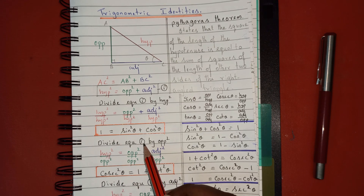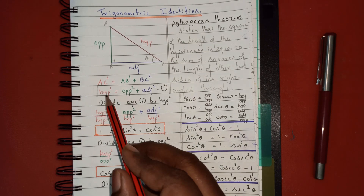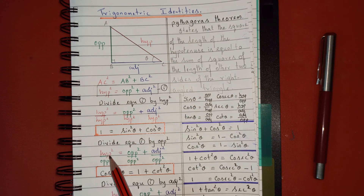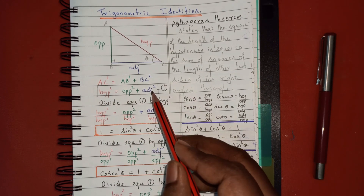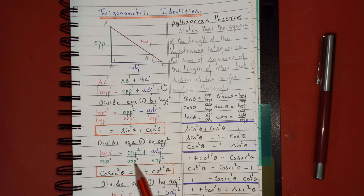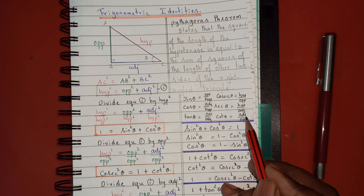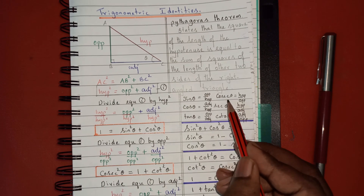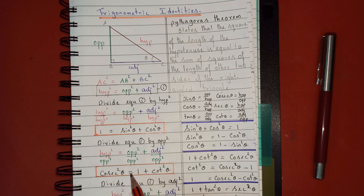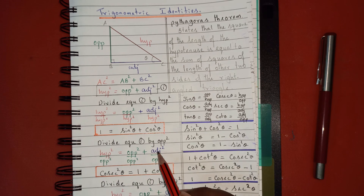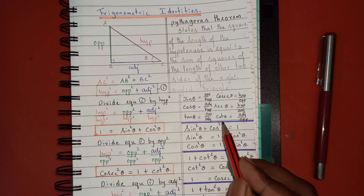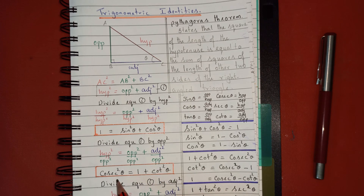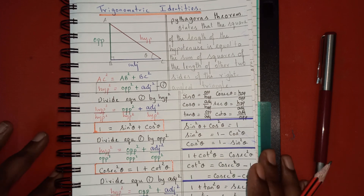For the second identity, I am going to divide the main equation by opposite². So: hypotenuse²/opposite² = opposite²/opposite² + adjacent²/opposite². Hypotenuse/opposite is cosecant θ, giving csc²θ. Opposite/opposite cancels to 1. Adjacent/opposite is cot θ, giving cot²θ. Therefore, the second identity is: csc²θ = 1 + cot²θ.